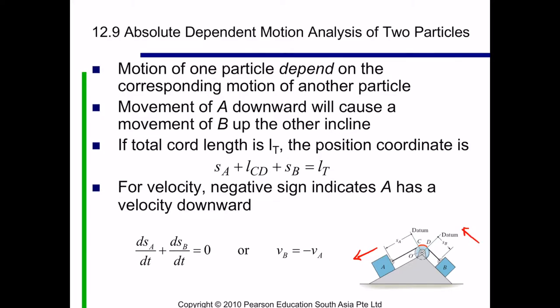If the total cord length is LT, the position coordinate is equal to SA plus LCD, the length of the cord at C and D, plus SB. So this equals to the total cord length.